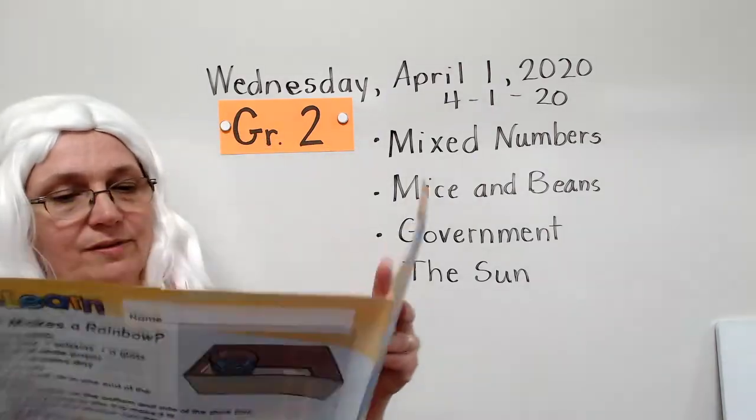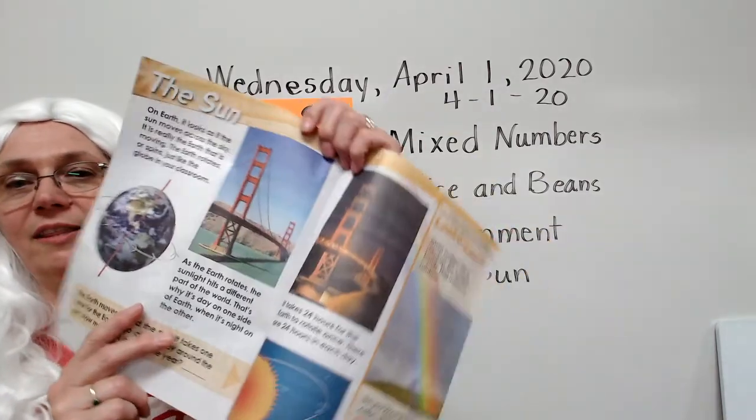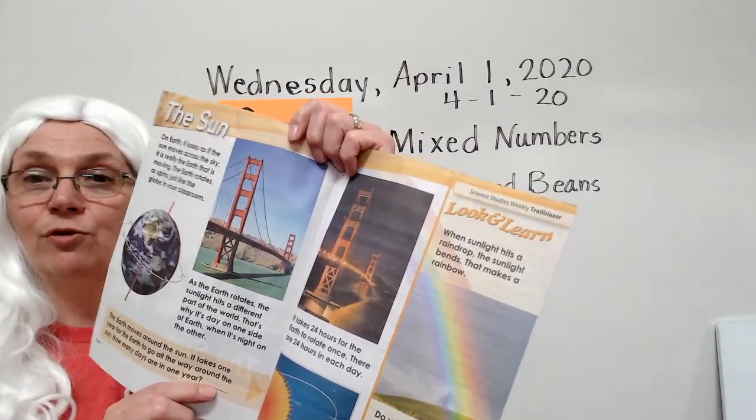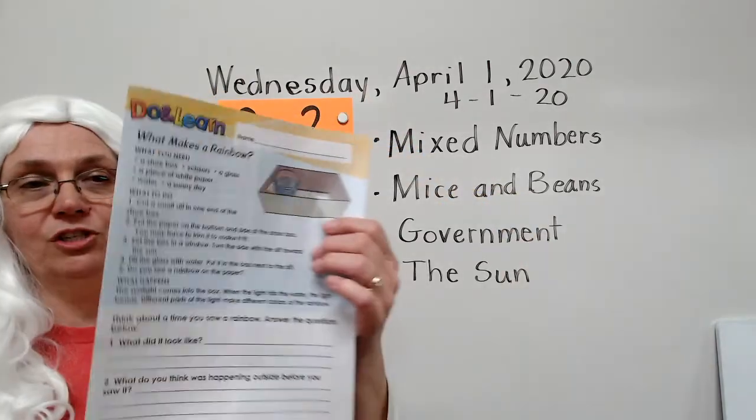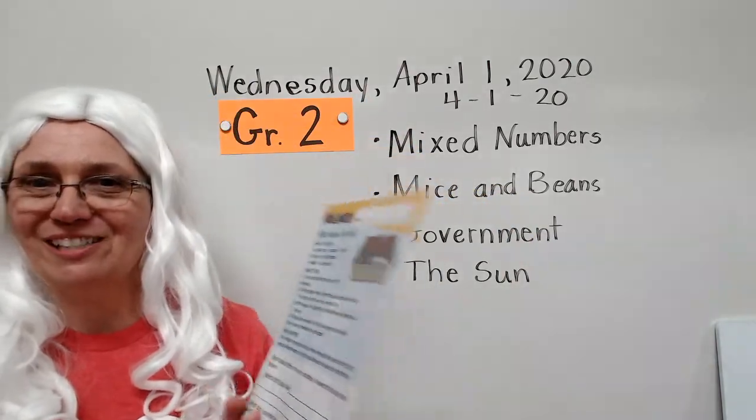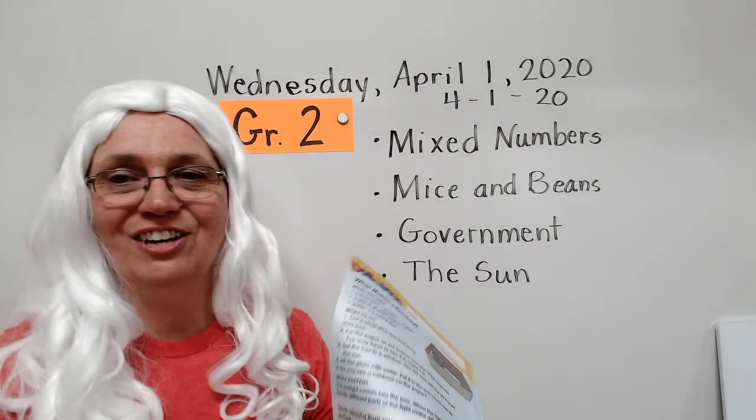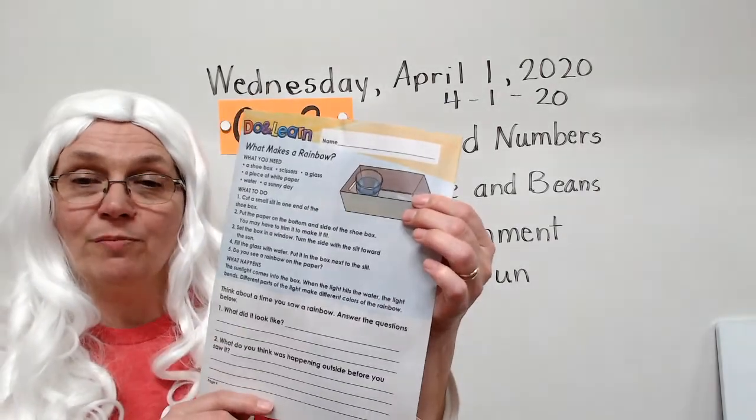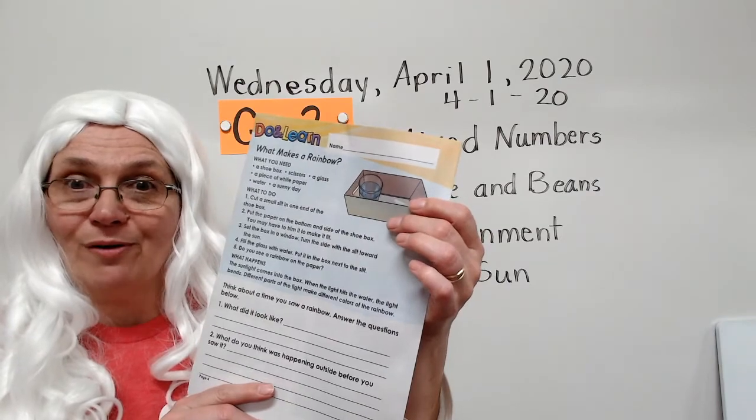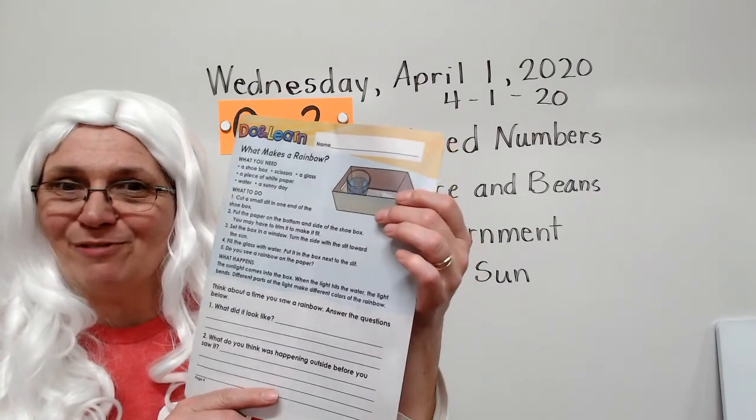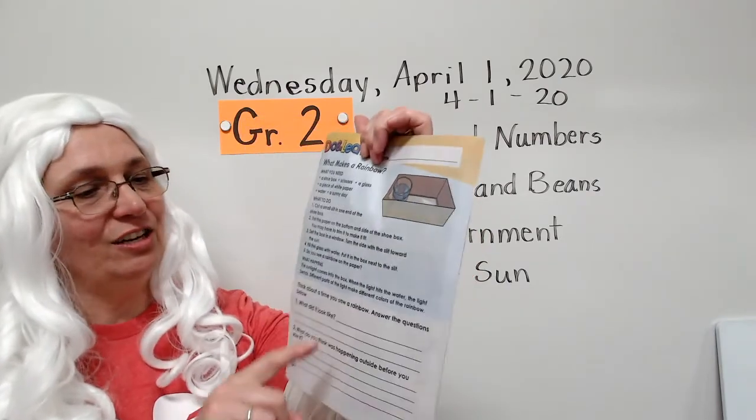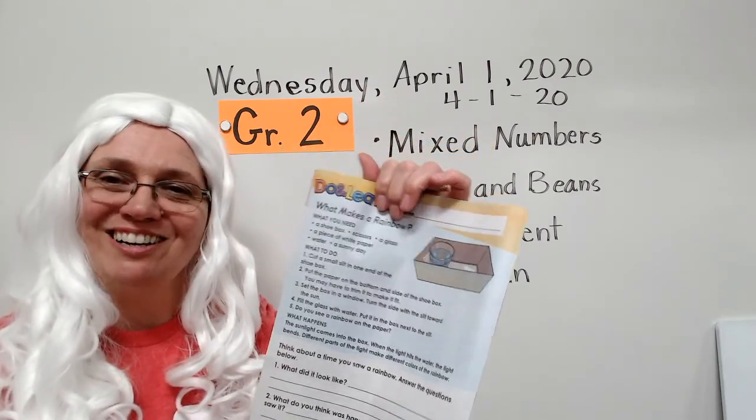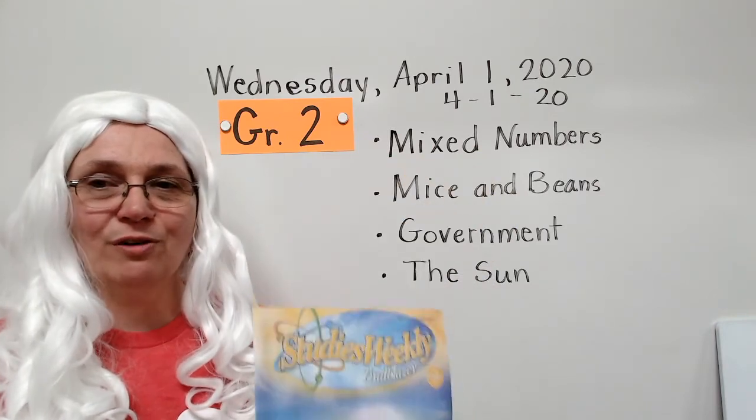And then you can also start reading The Sun for science, okay? Now on The Sun, there is a question on the inside bottom part here, so make sure you answer that question for me, okay? And then you've got some work to do on the back. Thankfully we've had some sunnier days here, so you might be able to do this experiment up on the top at home to make a rainbow. And if it works, send me a video of it. I'd love to see that. And then you have some work to do here on the bottom that talks about rainbows as well, okay? So that's your work for this week.